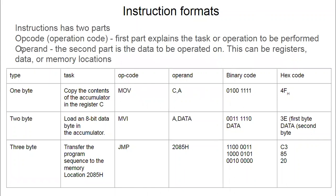An instruction has two parts: one is the opcode and the operand. For example, this instruction — MOV C, A — in this the opcode is this part and the operand is there. The opcode is the operation to be performed, and the operand is what the operation is performed on — whether it is a register, data, or a memory location. These are the three types of operands.